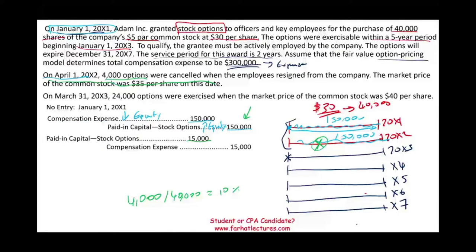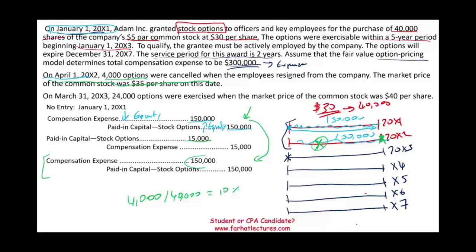At the end of 20x2, we make the same journal entry: debit Compensation Expense, credit Paid-in Capital — Stock Options, for the remaining $150,000. The two years of $150,000 each total the original $300,000, even though $15,000 was reversed for the cancellation. At this point, the company is done recording compensation expense, and employees who remain have five years to exercise their options.